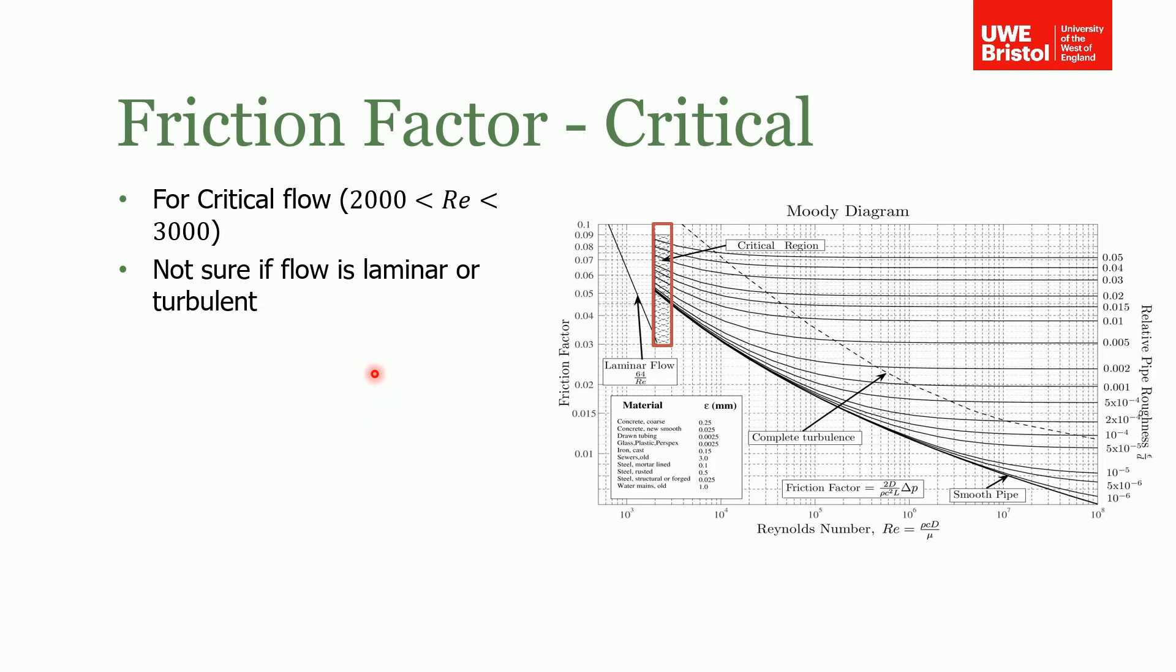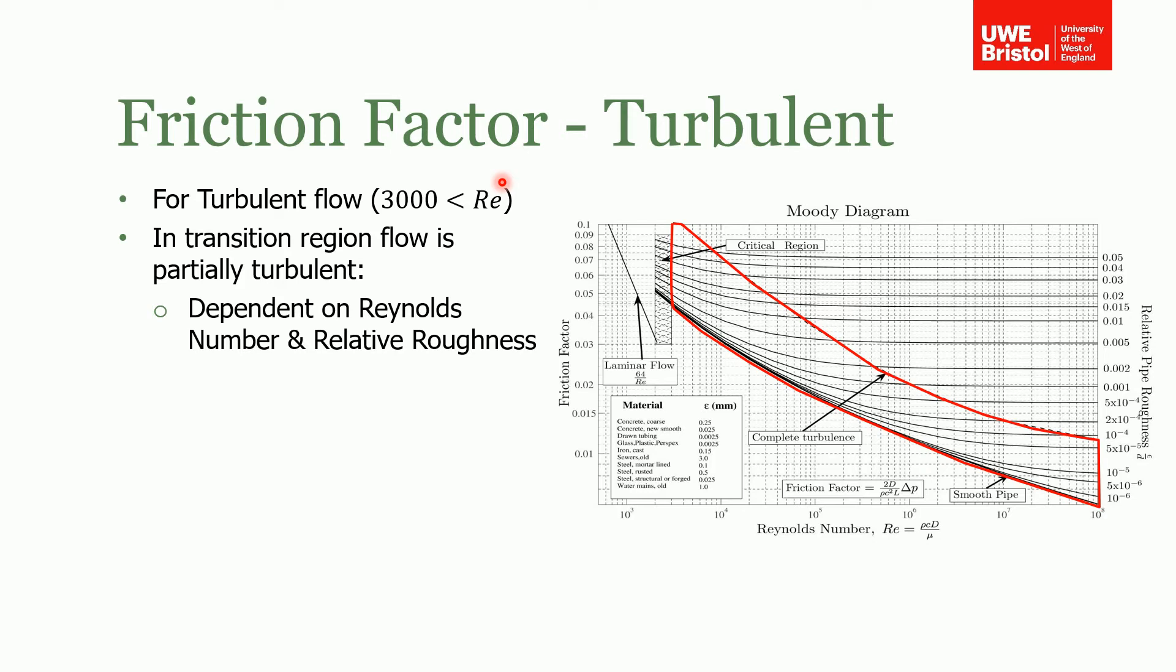The turbulent region can be broken up into two sub-regions. One is the partially turbulent region and the other is fully turbulent. On the plot here you can see that I've got the partially turbulent region highlighted, and in this area if you look at the gradient of the lines of relative pipe roughness, or more importantly friction factor, you can see that the friction factor is dependent on both the Reynolds number and the relative pipe roughness. So you look up your roughness, but this is changing; the friction factor is changing with Reynolds number.